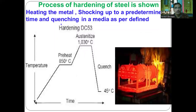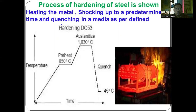The process of hardening of steel involves: first, heating of the metal; then soaking for a predetermined time; then quenching in a defined media. On the time-versus-temperature graph, initially preheating occurs up to 850 degree Celsius for a particular period of time. After that, temperature increases to the austenizing stage at 1030 degree Celsius, and that temperature is held for a definite period of time. After that, the metal is suddenly cooled by quenching — from 1030 degree Celsius rapidly cooled to 45 degree Celsius — so due to sudden cooling, the material becomes harder and the hardening process is completed.